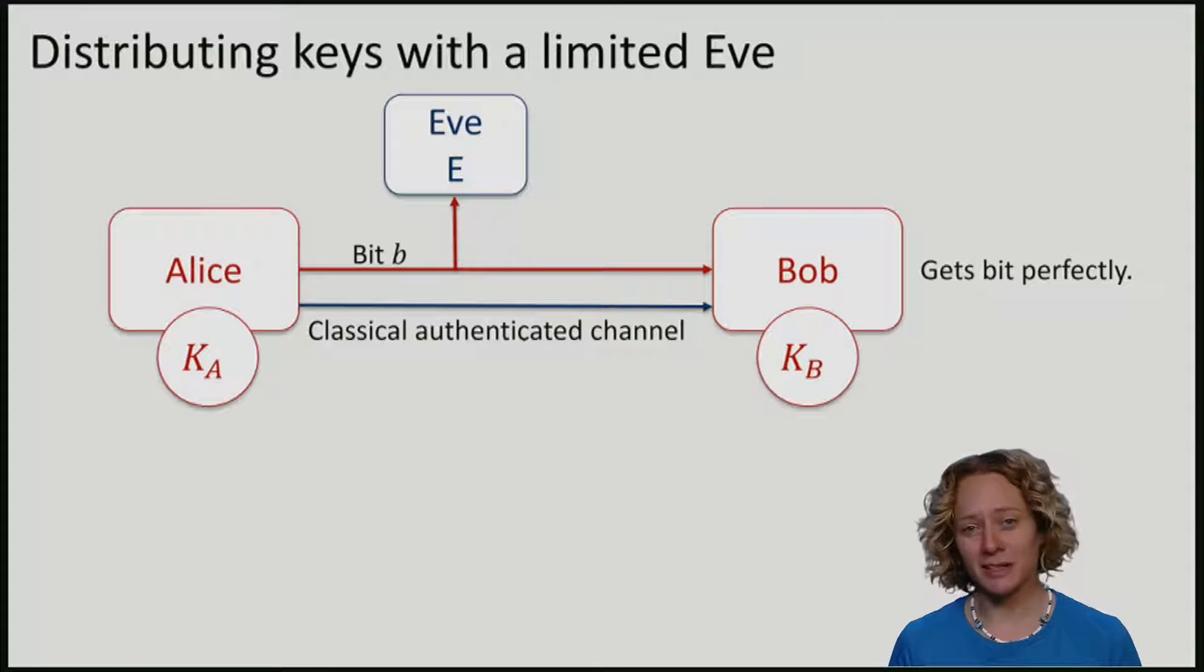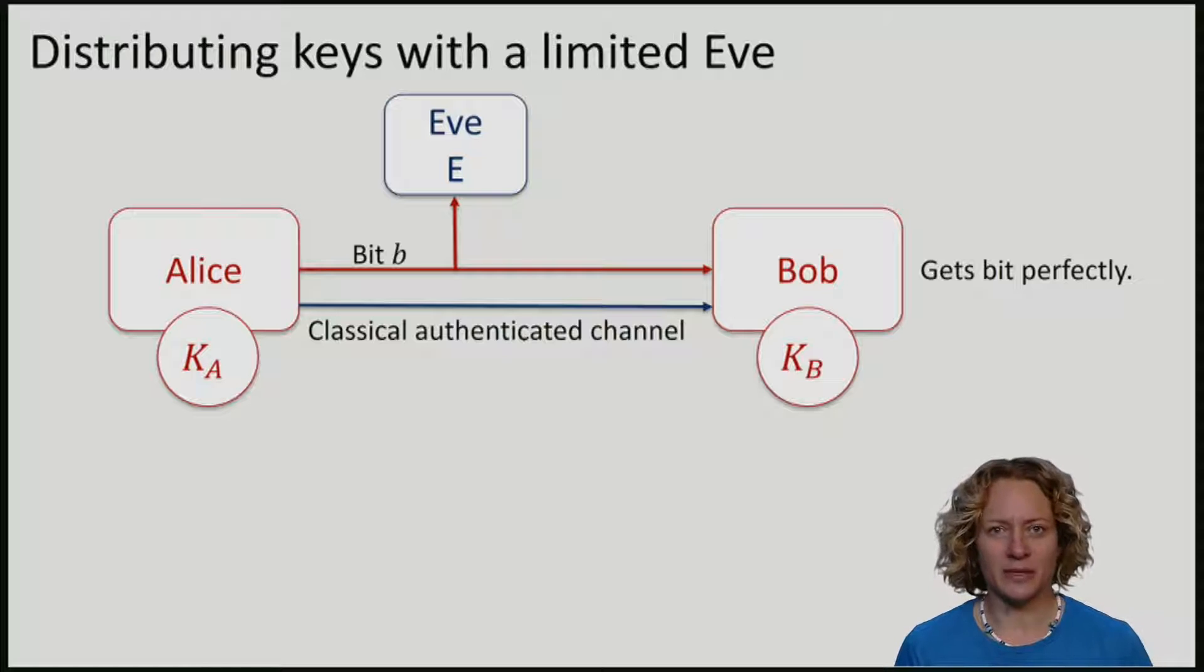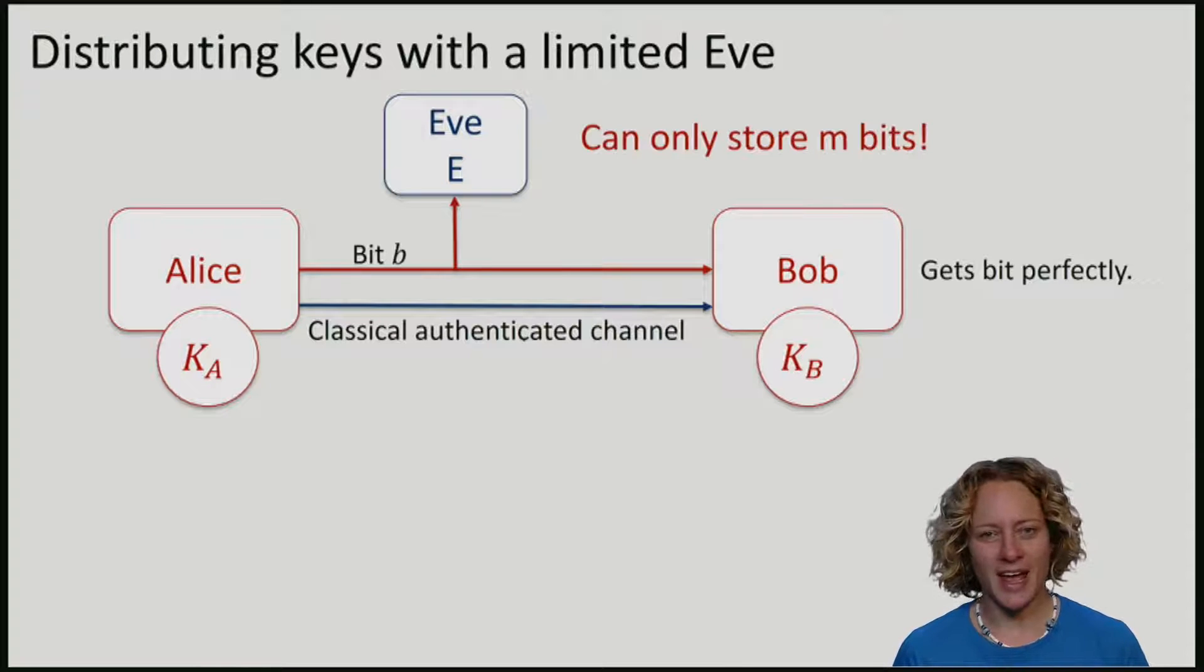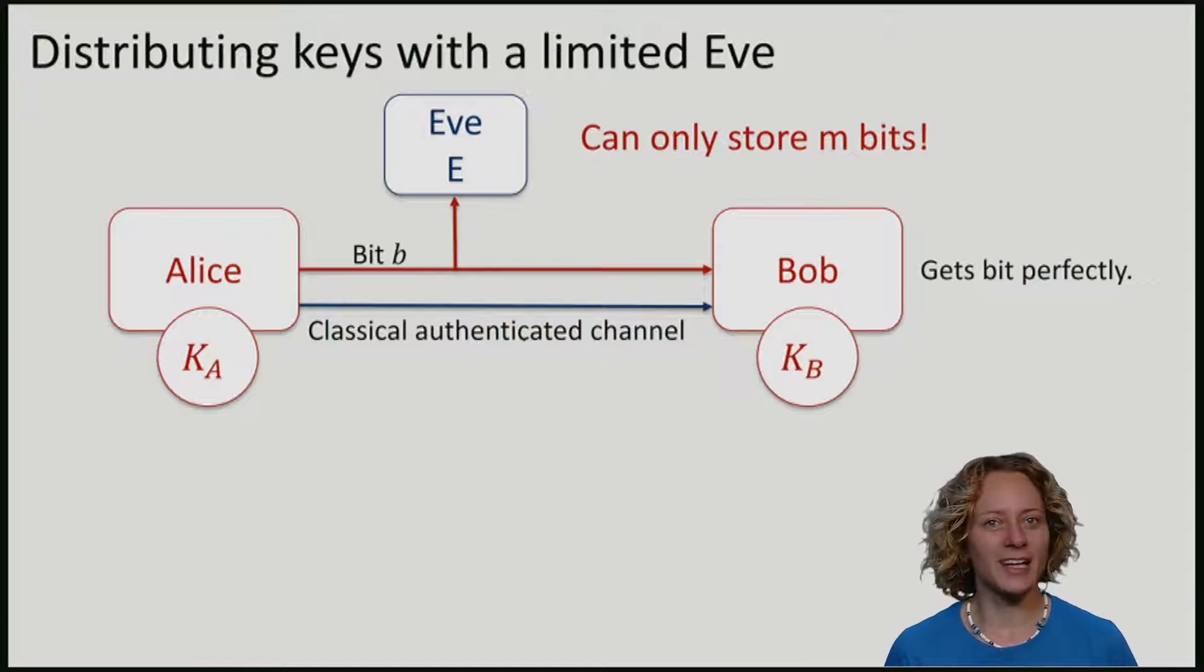In particular, Eve, who maybe got tired from intercepting keys all the time, has a limited memory. She can only store m bits. The question is, can Alice and Bob still produce any key?